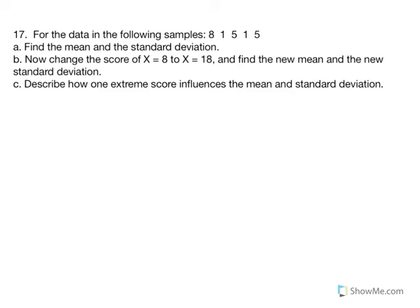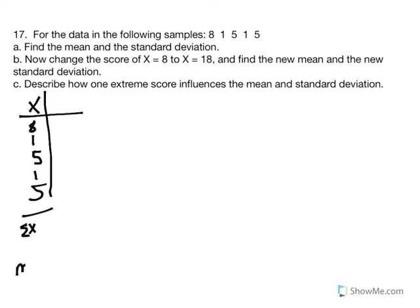Number 17: for the data in the following sample, we have x values of 8, 1, 5, 1, and 5. We need to calculate the mean of our distribution, so we need the sum of x. The mean is equal to the sum of x over n. We have 5 scores. Calculating the sum of all x values, we should get 20.